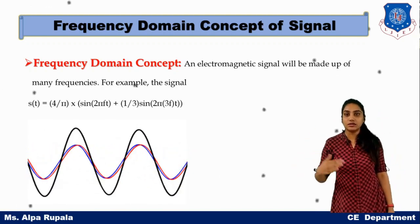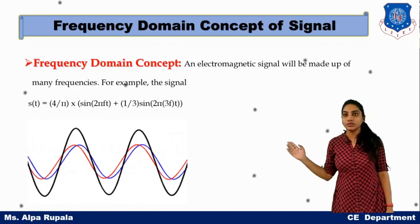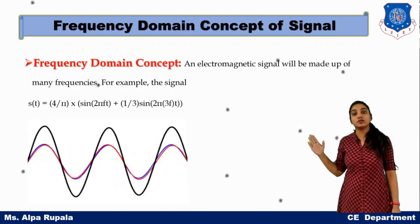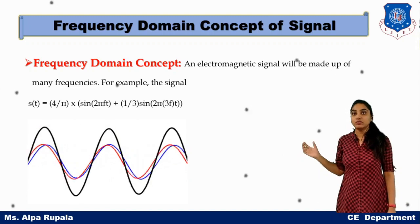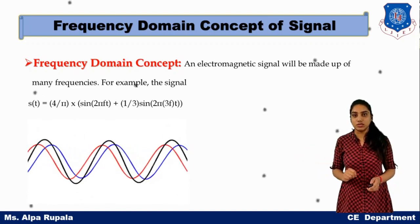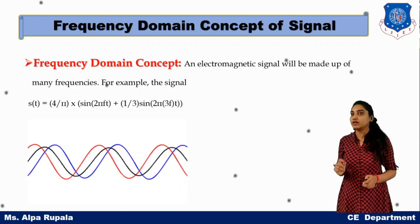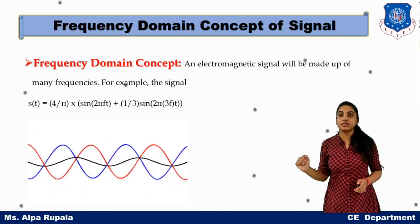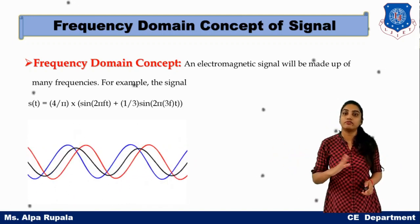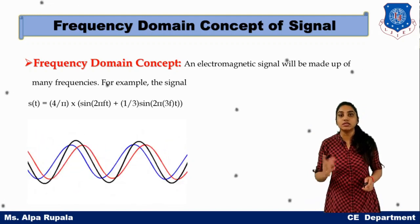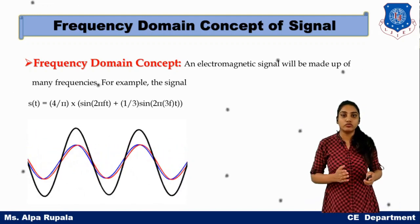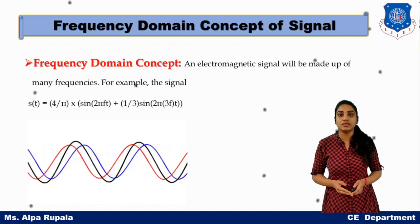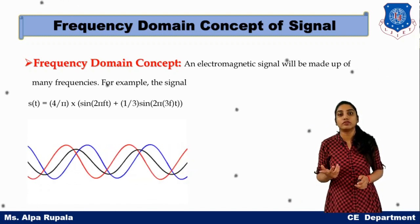Let us see this concept in mathematical form. S(t) is an example of a frequency domain concept signal, which is a combination of two signals. The first signal is sin(2πft), having a smaller frequency f. The second signal is (1/3)sin(2π·3ft), having frequency 3f. Ultimately, we have two frequencies: f and 3f, and your actual signal is a combination of both frequency signals.